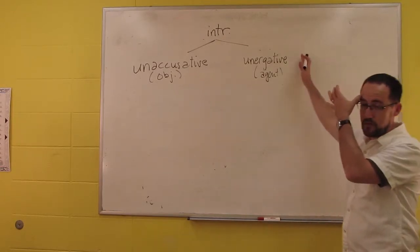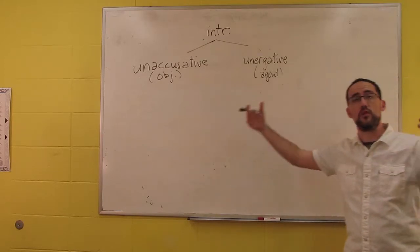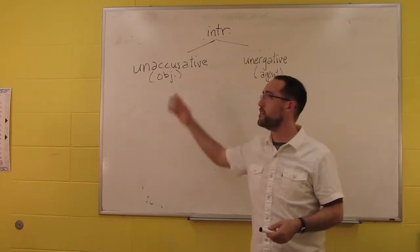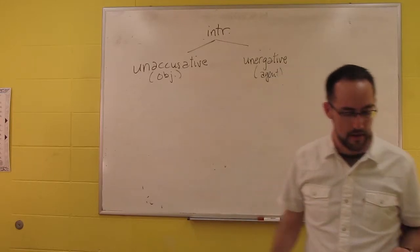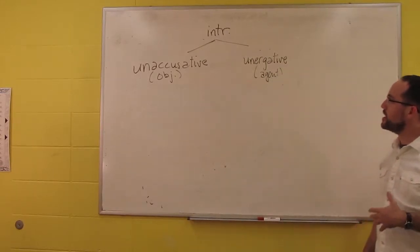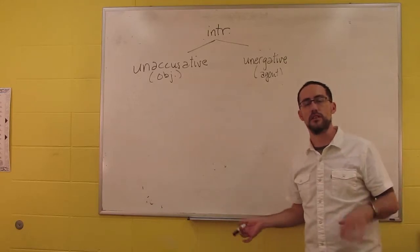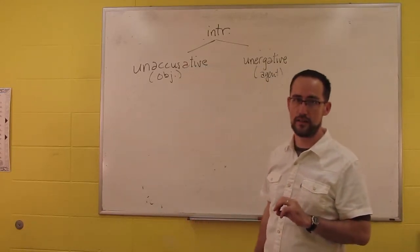Ergatives, if you recall, are the subject of a transitive. So it behaves like the subject of a transitive, but it's an intransitive. Here, it behaves like the object of a transitive, but it's an intransitive. Hence the name. Unergatives and unaccusatives, this is a distinction we find in language after language, but each language has its own way of distinguishing these predicates.